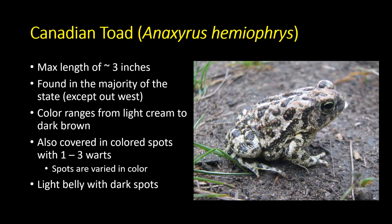That moves us from frogs to toads. The first toad is the Canadian toad, Anaxyrus hemiophrys. This toad and the American toad are very difficult to tell apart. Currently I believe the American toad is extirpated from North Dakota, but we'll talk about ways to differentiate them — they sound different and there are a couple of visual things to look at, though they look very similar.